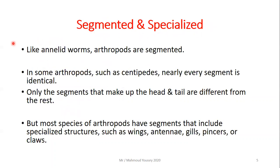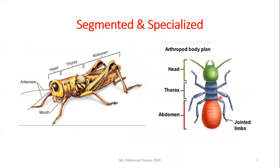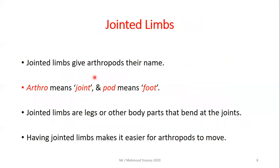Like annelid worms, arthropods are segmented. In some arthropods such as centipedes, nearly every segment is identical — only the head and tail segments differ. But most species have segments with specialized structures such as wings, antennae, gills, pincers, or claws. During development, some segments grow together, forming three main body parts: the head, the thorax, and the abdomen.